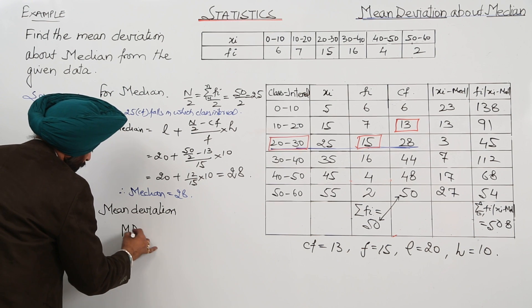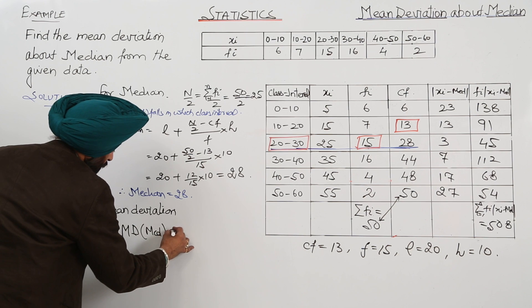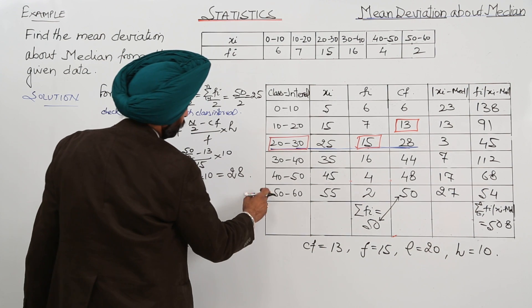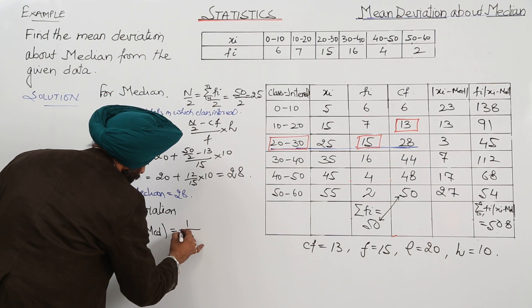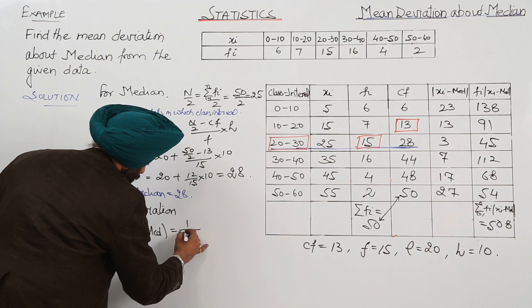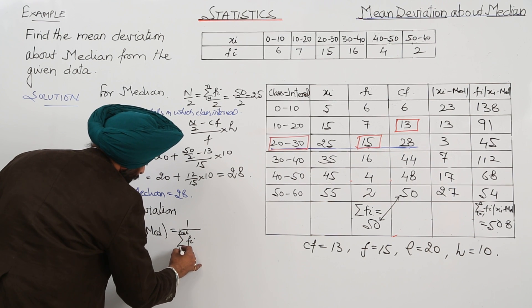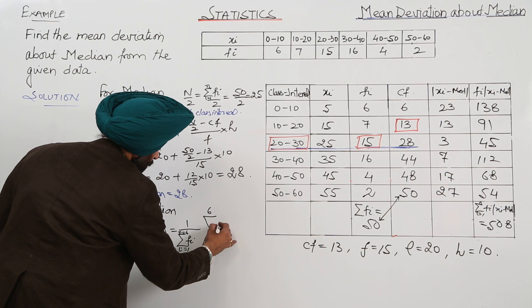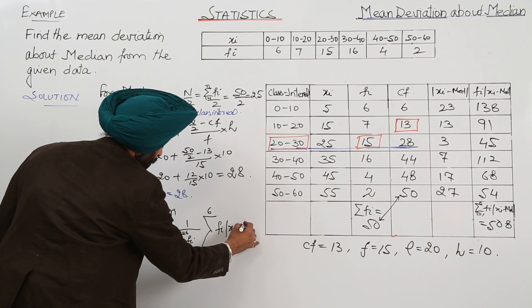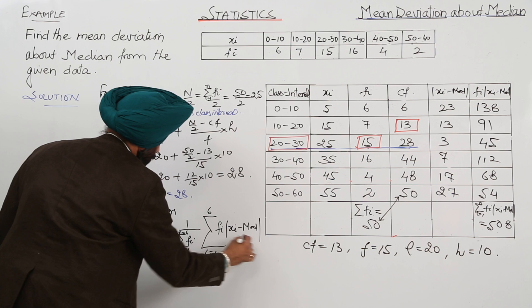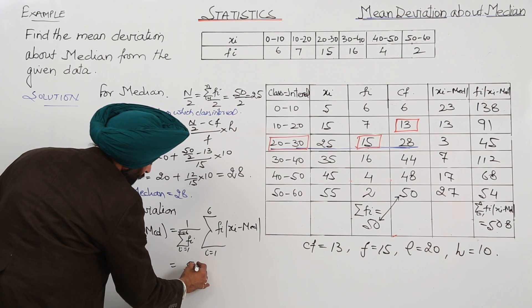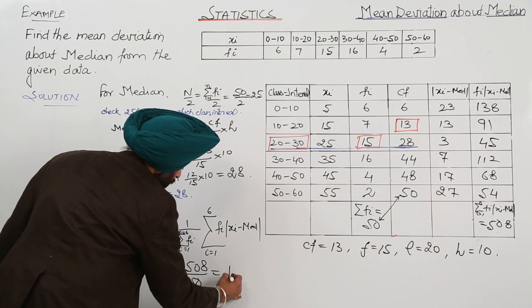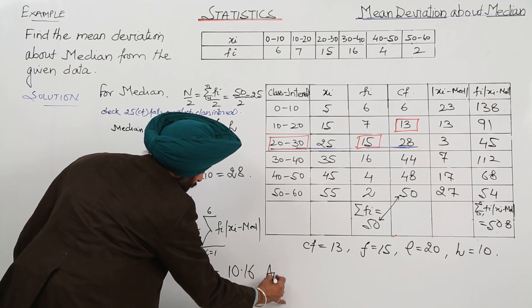Mean deviation about median is equal to 1 upon summation of Fi times summation of Fi times Xi minus median. This is equal to 508 upon 50 and is equal to 10.16. This is the answer.